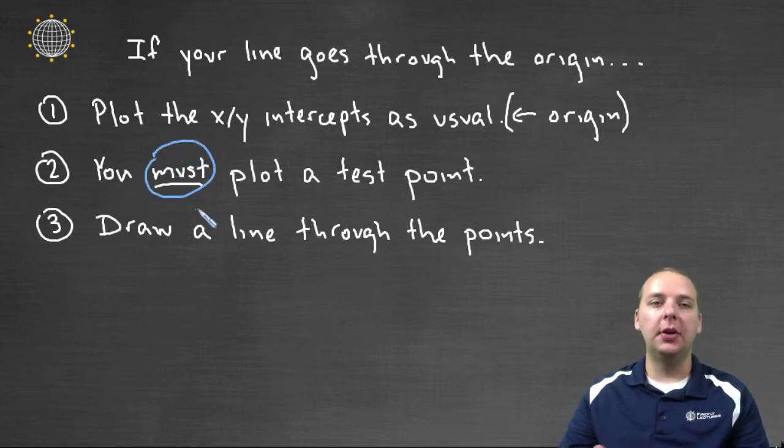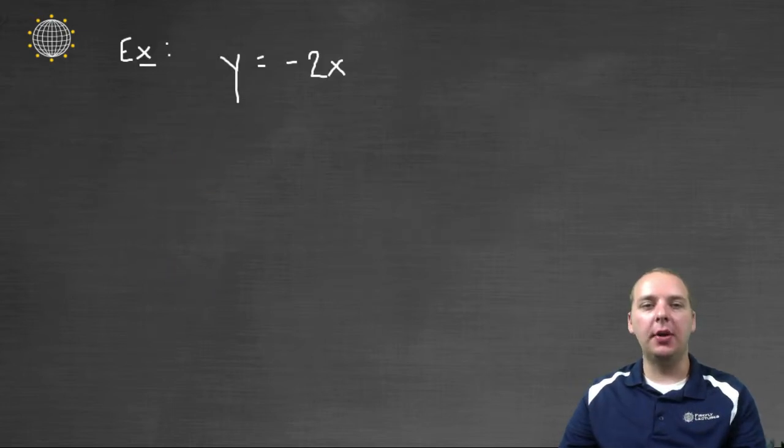It's no longer an option. And you really need that extra point to serve as your second point to help you see the line. And then step number three is the same as it always is. You'll simply draw a line through those points. So let's try an example here.